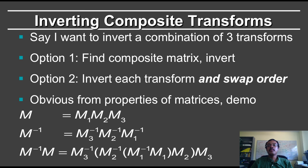Finally, one thing that we may want to do is to invert a composite transformation. So let's say I have 2 or 3 transformations, scales, rotations, may even be translation. How do I invert it to get back to the correct position?